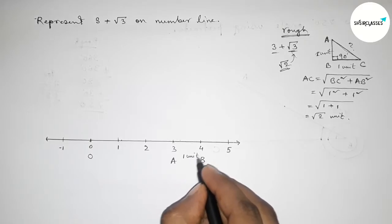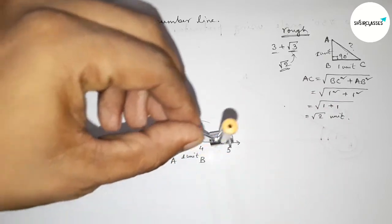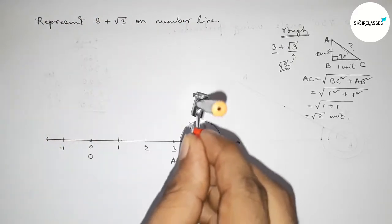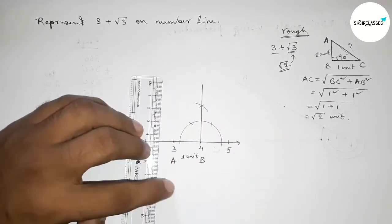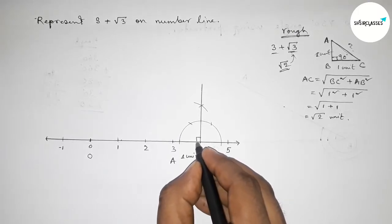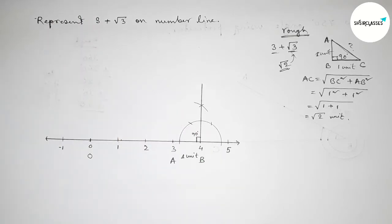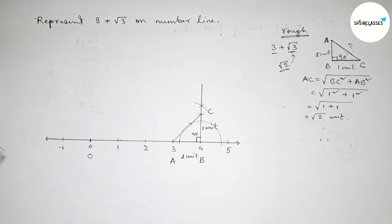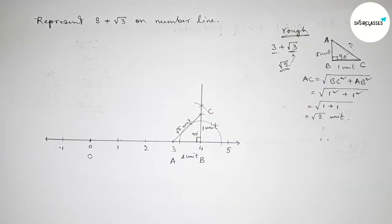Applying this concept on the number line from three to four — taking point B, AB equals one unit length. Drawing a 90-degree angle at point B using a compass. Then taking one unit length and marking point C. Joining A and C — we can say AC equals root 2 unit length.